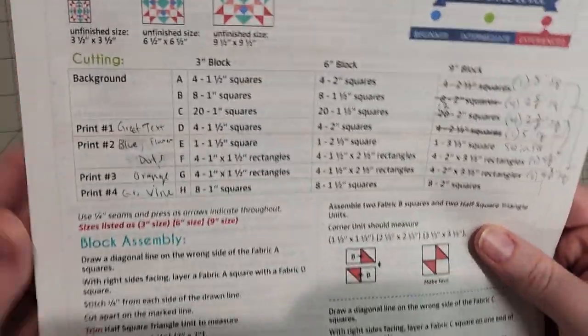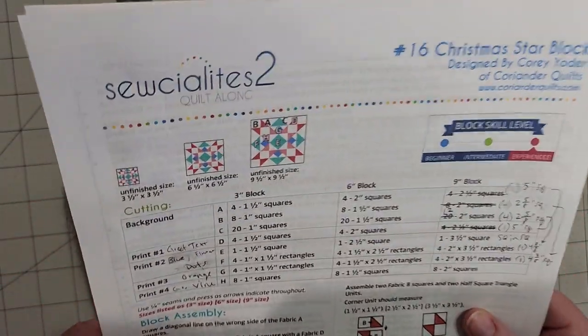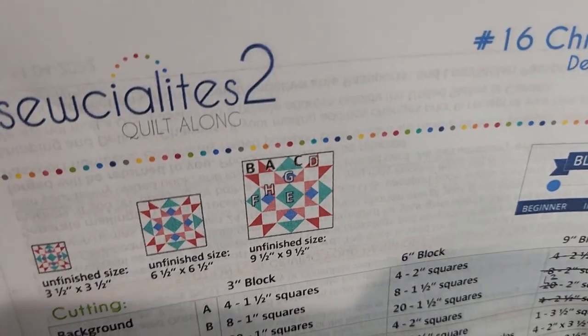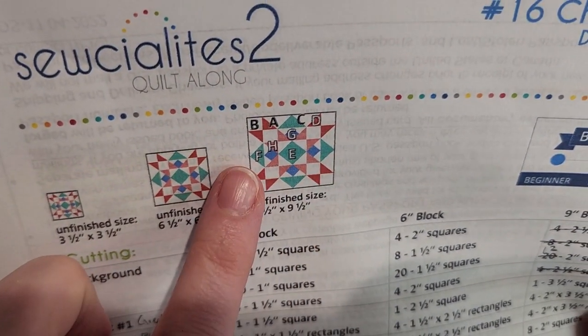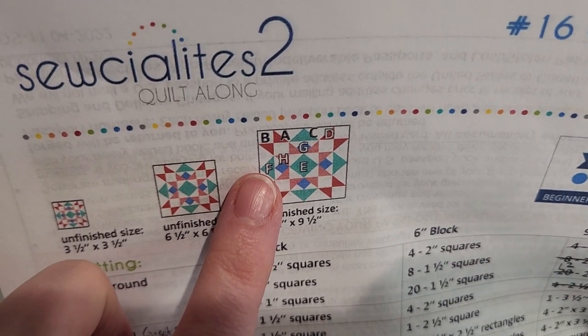So that's HSTs. The other thing I want to talk to you about is the flying geese. There are a lot of flying geese in this pattern. There's the flying geese around the edges in that teal color so that's just standard four flying geese.